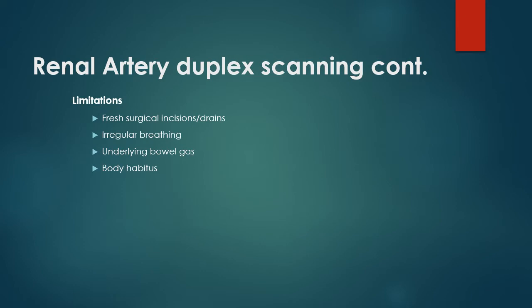What are the limitations of renal artery duplex? Fresh surgical incision or drainage. A patient with irregular breathing, because occasionally you would need the patient to take a deep breath — some patients are unable to hold their breath, which can make it technically difficult for the technologist to image the renal artery. A patient with underlying bowel gas, and body habitus — a patient with a certain weight — can make imaging of the renal artery quite difficult.